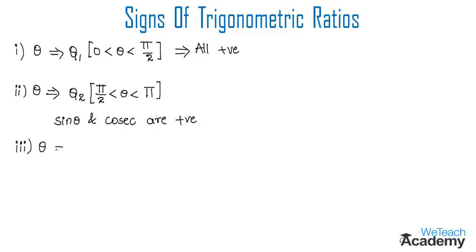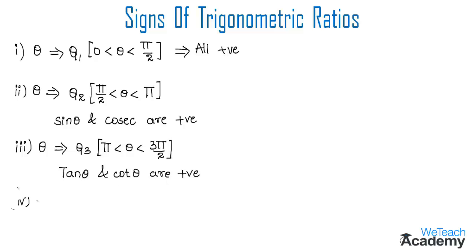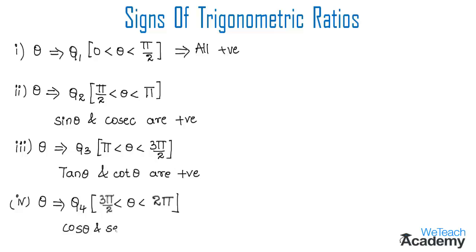If theta lies in the third quadrant (Q3), between 180 degrees and 270 degrees — that is pi < theta < 3pi/2 — only tan and cot are positive and the rest are negative. If theta lies in the fourth quadrant, where 270 degrees to 360 degrees — that is 3pi/2 < theta < 2pi — only cos theta and secant theta are positive and the rest are negative.